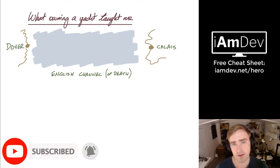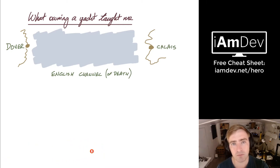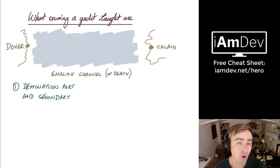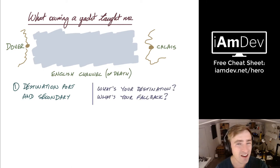So as a yachtsman, first of all we set our destination port and our secondary port. So not just Calais, I might want to go north or south of that if something goes wrong, or set a secondary port on the English coast, maybe the Isle of Wight, something similar. That's in case things go horribly wrong. Now the corollary in life: what's your destination? What's your fallback? If you don't become that top salesman at your company and it turns out you're not good at it, what's your fallback? What are you going to do instead?